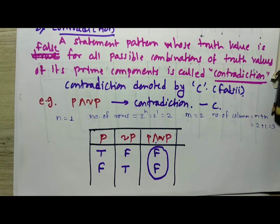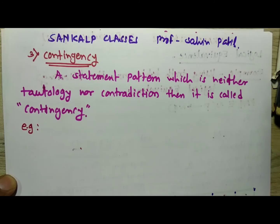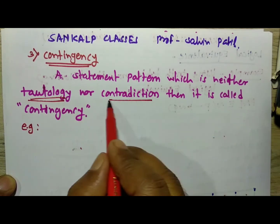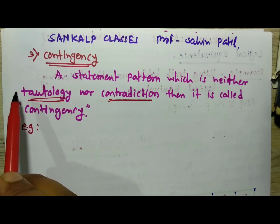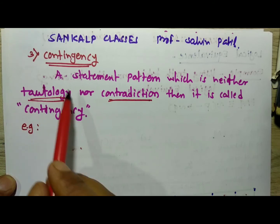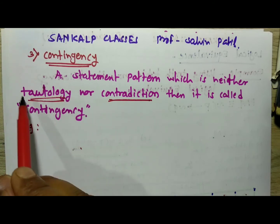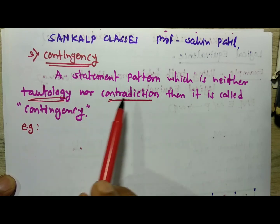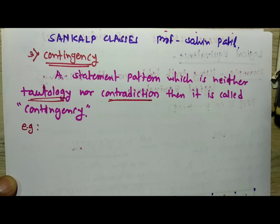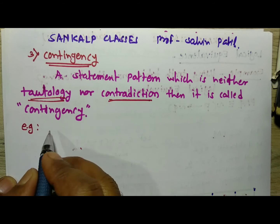The third concept is contingency — a statement pattern which is neither a tautology nor a contradiction. That means for all possible truth values of the prime components, it does not become completely true or completely false. Such a statement pattern is called a contingency.